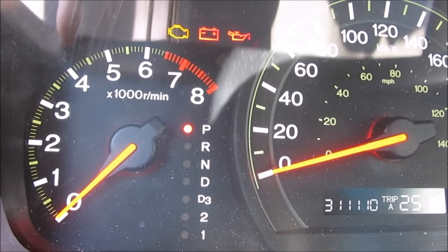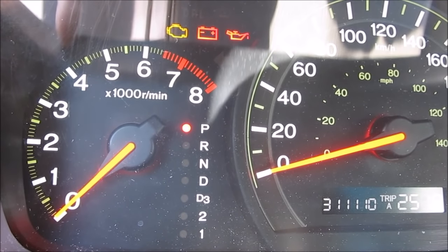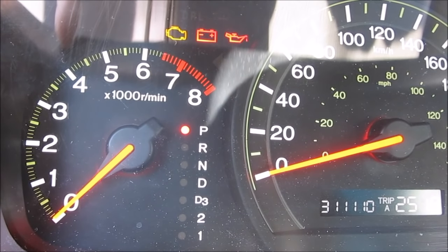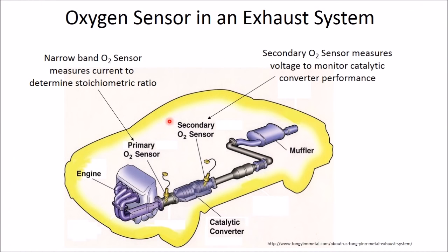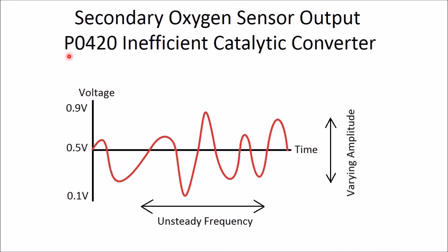Today we're going to be diagnosing and repairing a P0420 check engine light for an inefficient catalytic converter on a Honda. The engine produces warm exhaust gases that go first to the primary O2 sensor, which measures current to determine if the stoichiometric ratio of air to fuel is 14.1 for optimal combustion. We've got the secondary O2 sensor at the back of the catalytic converter to measure converter performance — it measures in voltage. If your catalytic converter is working at less than 95% efficiency, it's going to throw the P0420 code.